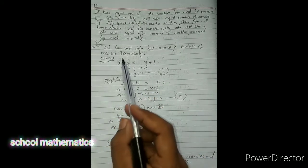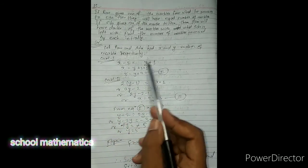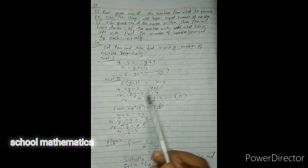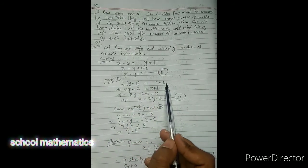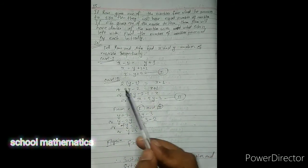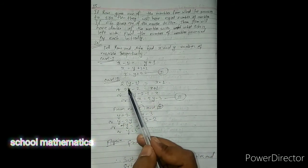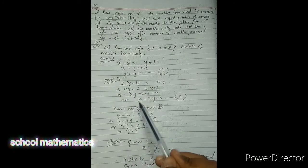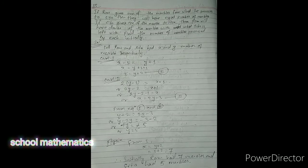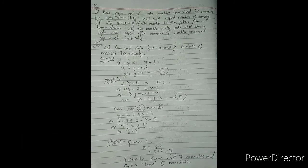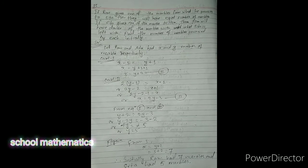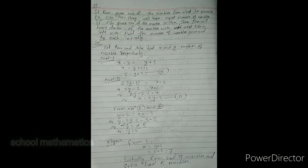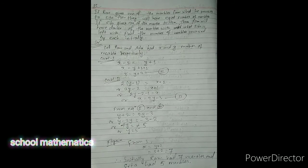Let's verify: if Ram gives one marble to Sita, Ram has 6 and Sita has 6 — equal. If Sita gives one to Ram, Ram has 8 and Sita has 4, and 8 is double of 4. Correct. Thank you, see you in the next class. Stay safe, stay healthy, bye bye.